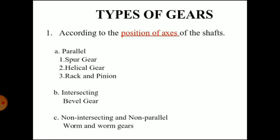Now we will see the classification of gears. The first category is according to position of axis of the shafts. It is subclassified as: parallel axis — types include spur gears, helical gears, and rack and pinion; intersecting axis — example is bevel gear; and non-intersecting and non-parallel — example is worm and worm gears.